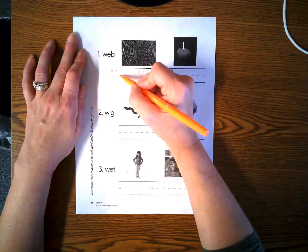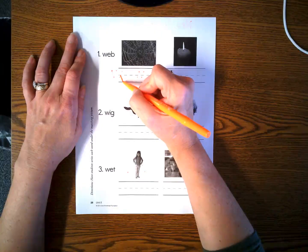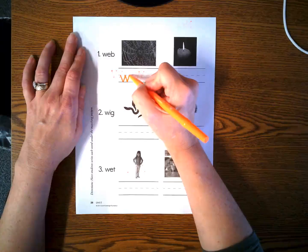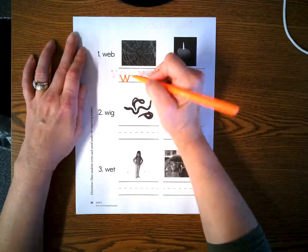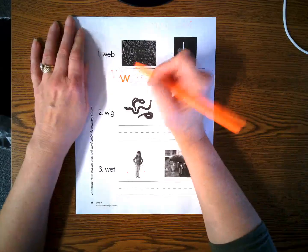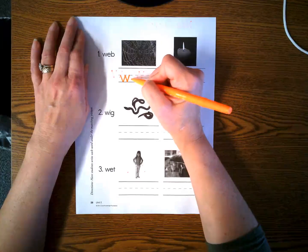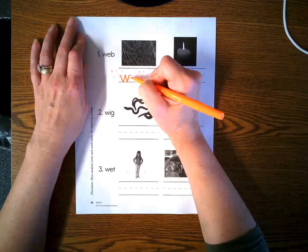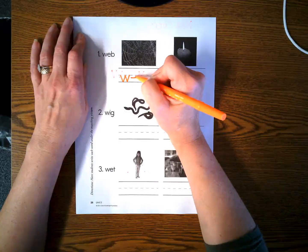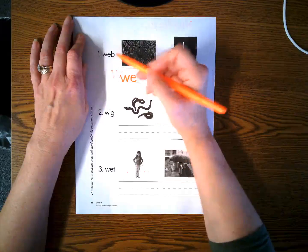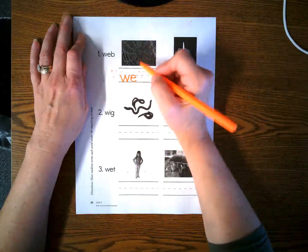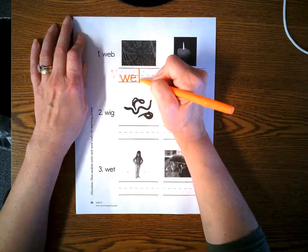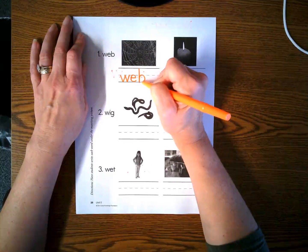Start diagonal, down, up, down, up. Lowercase e. Remember lowercase e can be tricky. We start in the middle here. It's a horizontal line. Line, and around. The letter b. It starts at the top. Line down, come up, and around.